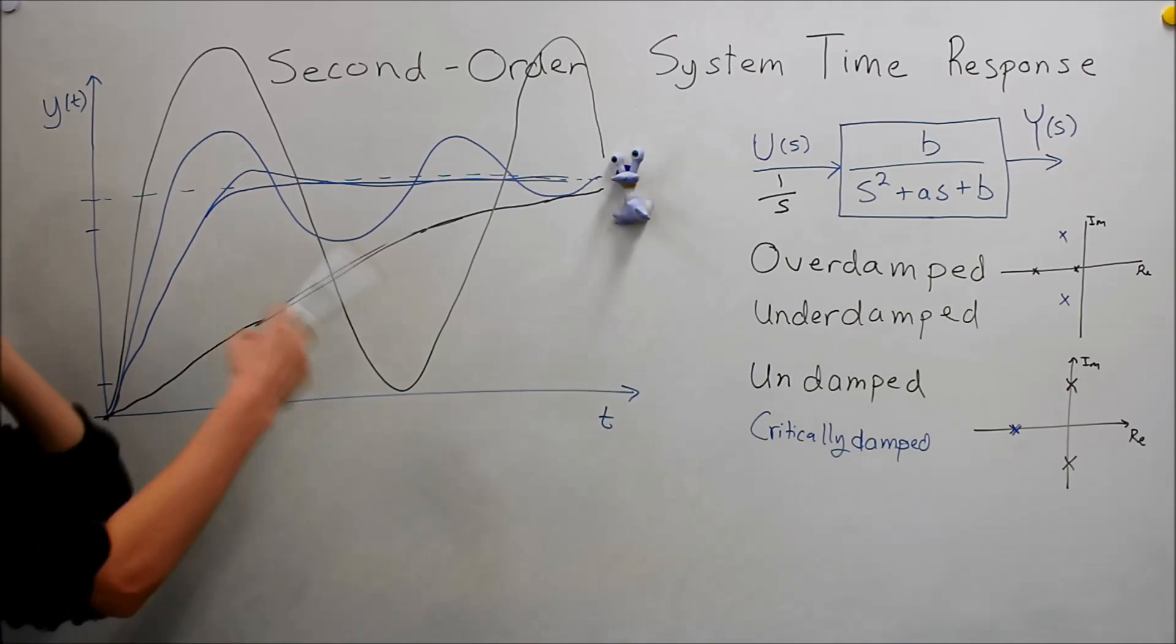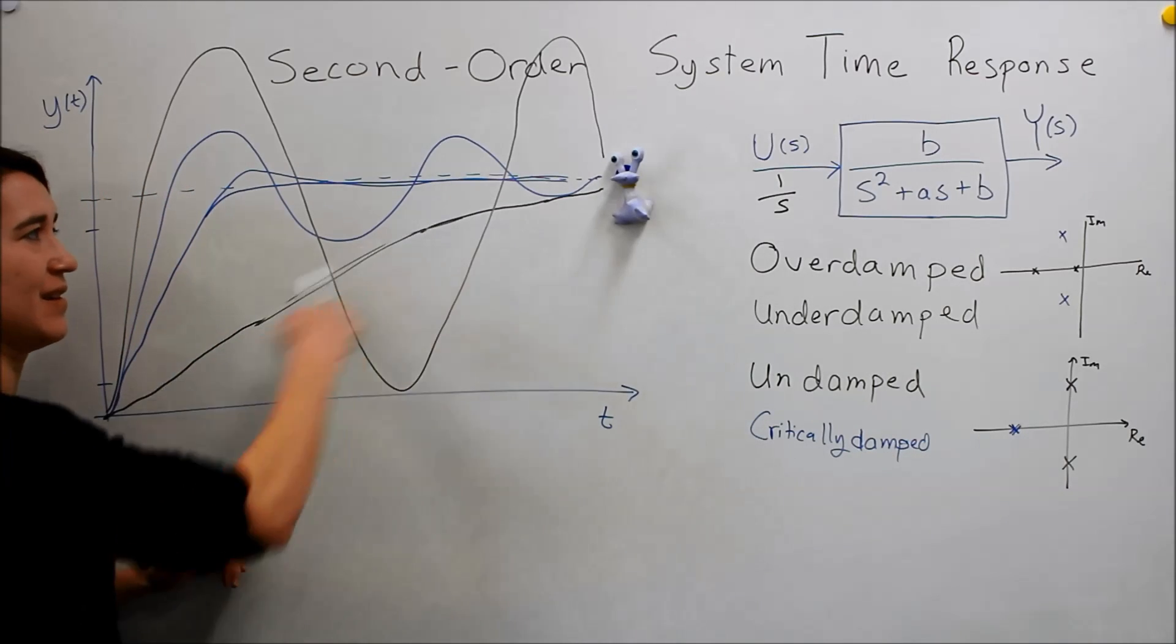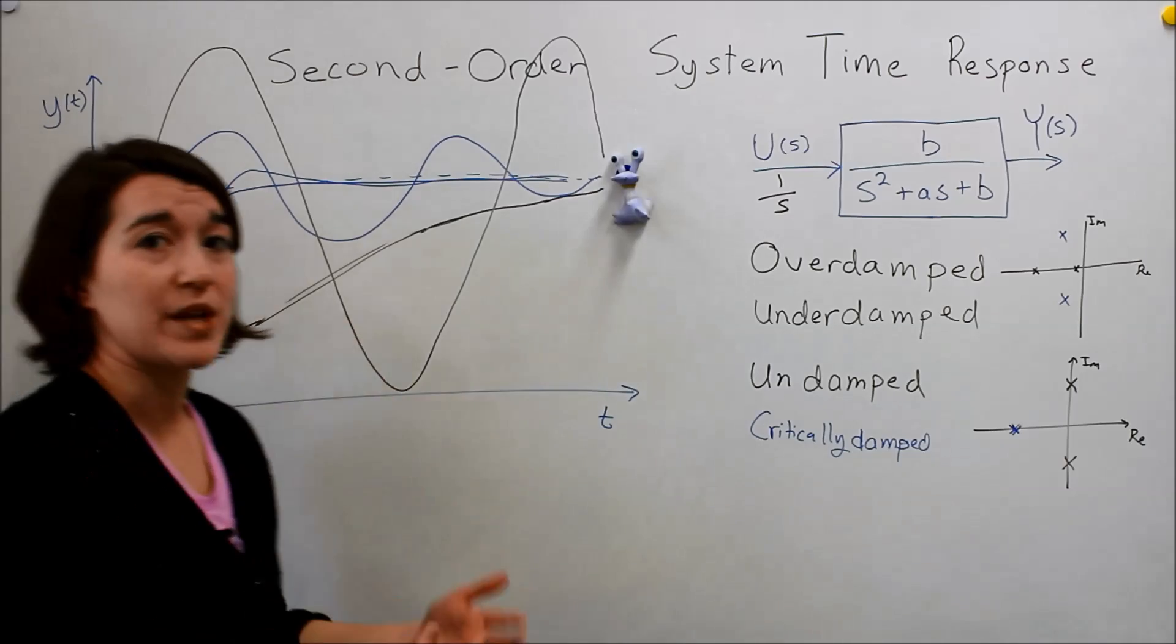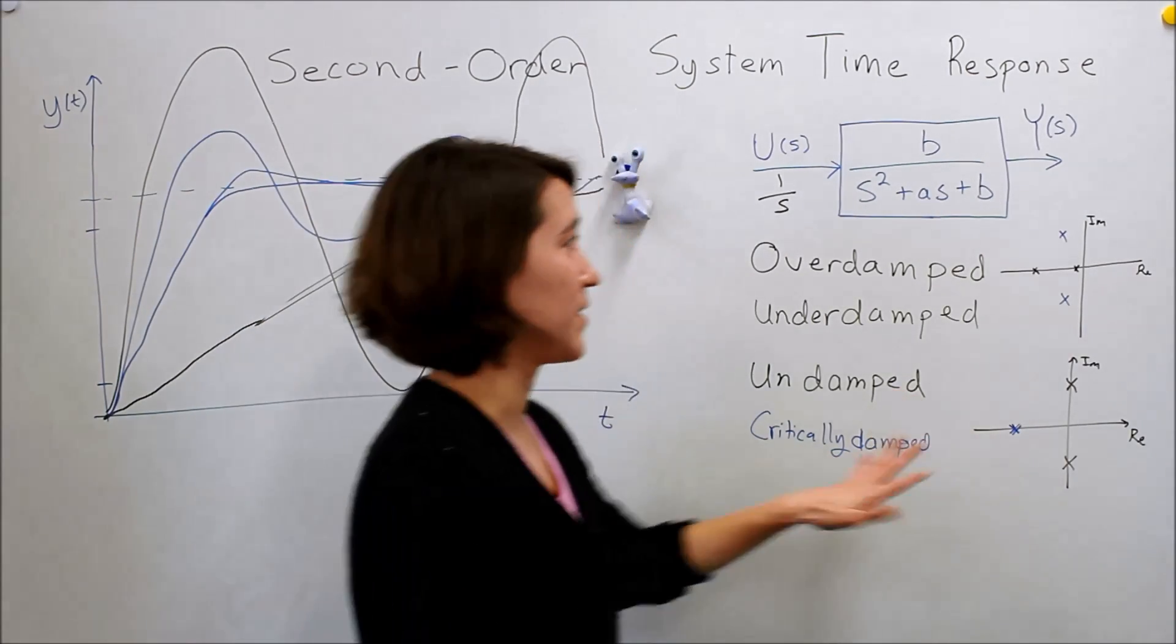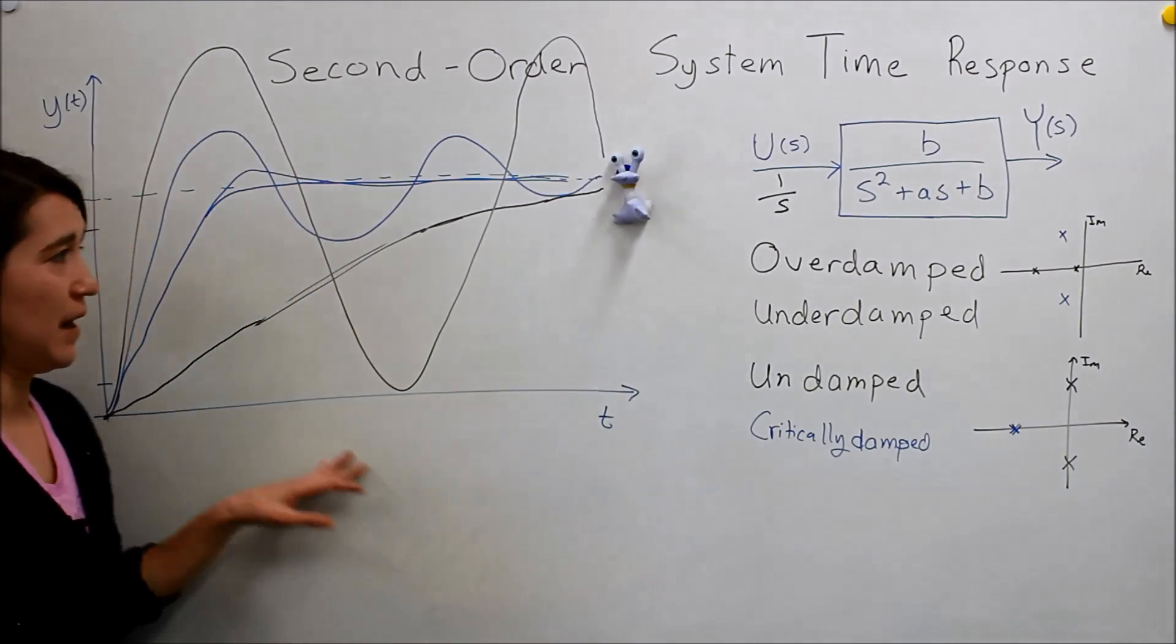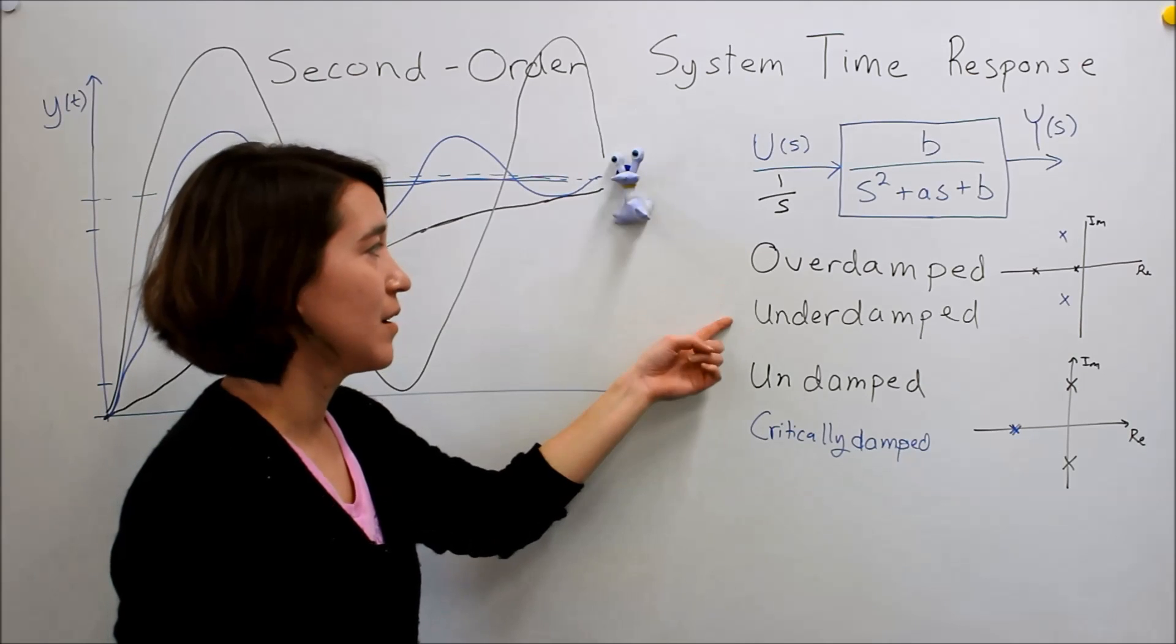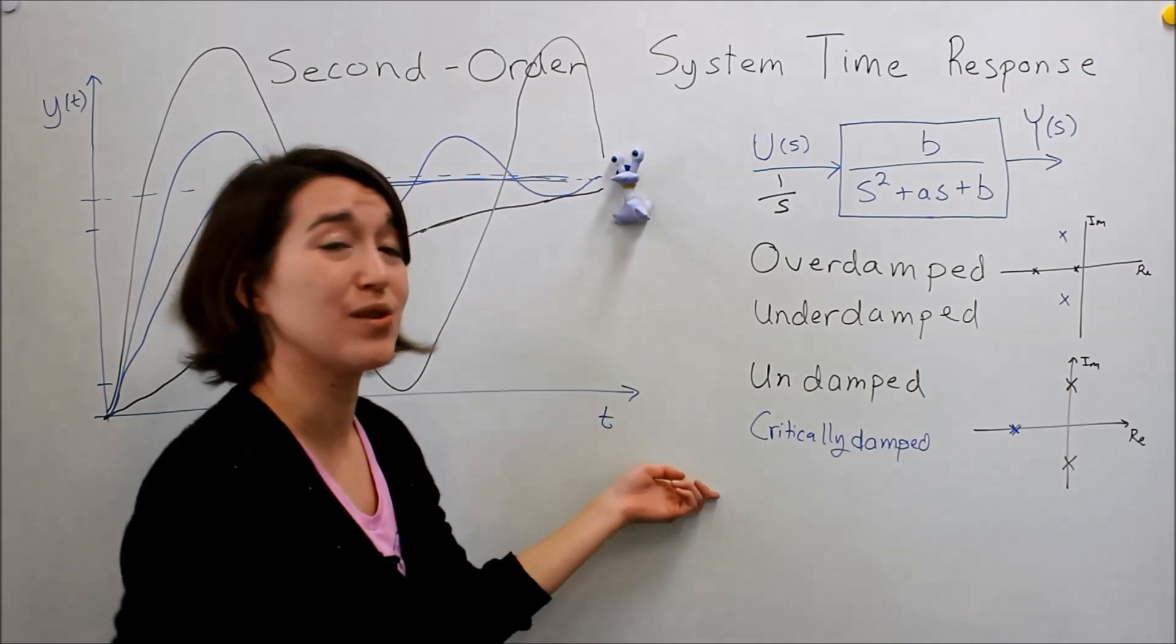These are just terms that are important to know. So if you say my system's overdamped, it means you need to compensate for that. If it's underdamped, you need to damp it a little bit more and change the position of the poles. Now you should be able to understand when someone says the system is underdamped, overdamped, undamped, or critically damped, you should know what that means.